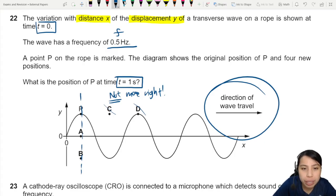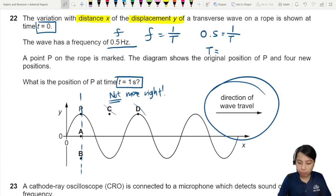So frequency is 1 over T or in this case we know that frequency is 0.5. 1 over T will give us the period. Okay so that means two seconds.